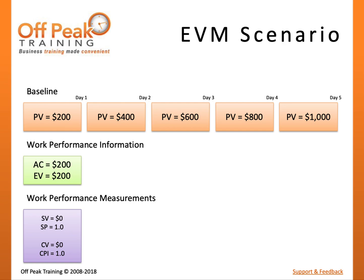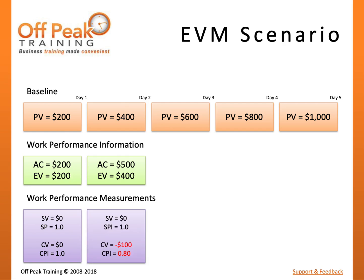On Day 2, you complete Task B at a cost of $300. Since we earned $400 and planned $400, our Schedule Variance is zero. However, we have earned $400 of work but spent $500, so our Cost Variance is negative $100 — we are over budget. Our Cost Performance Index tells us that for every $1 spent, only $0.80 worth of work has been accomplished.